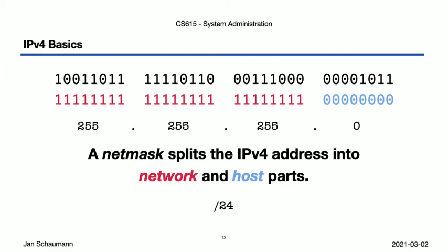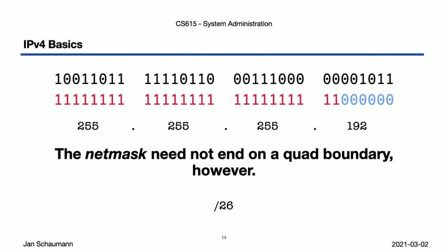The netmask doesn't have to align with the decimal dot boundaries — it's really just a sequence of bits. If we wanted a smaller subnet, we could use a /26 network, which is 255.255.255.192 in decimal. Or for a larger network, we might use a 22-bit network. Fortunately, we don't need to perform this logic in our head — computers are much better at manipulating binary numbers, and there are all sorts of convenient tools to help you identify the right netmask. For example, we have the ipcalc utility, which you can install from your favorite package manager.